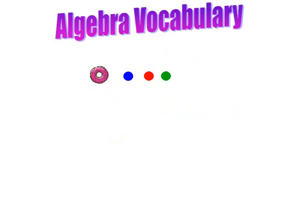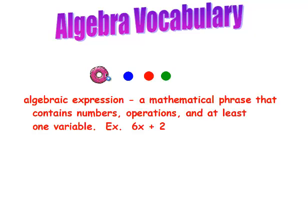First let's go over some important algebra vocabulary. An algebraic expression is a mathematical phrase that contains numbers, operations, and at least one variable. The difference between an expression and an equation is that an algebraic equation has equal signs, and an algebraic expression does not.